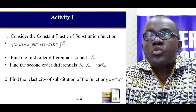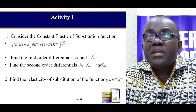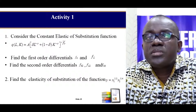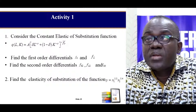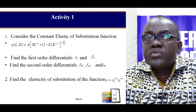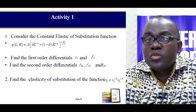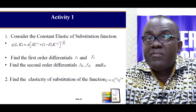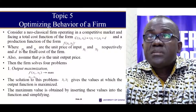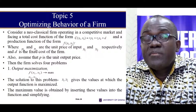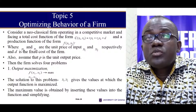I would like you to go through this activity: take the CES (Constant Elasticity of Substitution) function shown here and investigate it — compute the first-order and second-order derivatives and find the elasticity of substitution. This is a specific Cobb-Douglas function where alpha and beta are given, and you need to work through it.